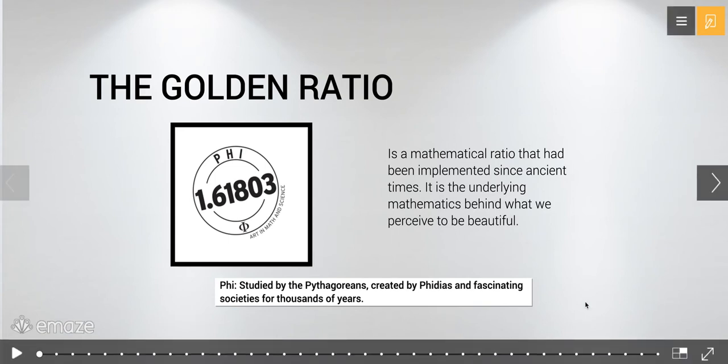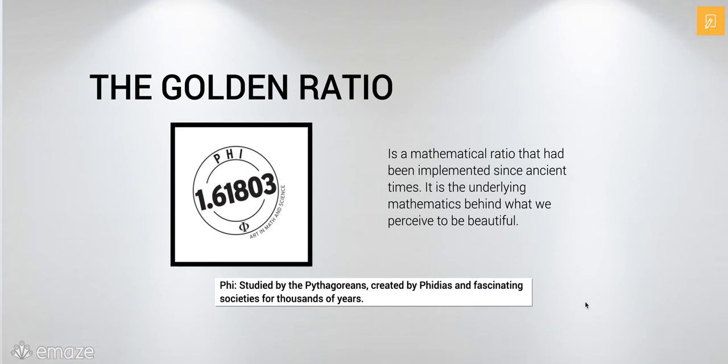Phi was created by Pheidias — that's why it is called phi. It was also studied by the Pythagoreans. You probably know the Pythagorean theorem, which is a² + b² = c², used for right triangles to find sides. But the golden ratio fascinates society and has been fascinating society for thousands of years.